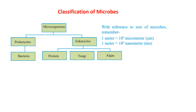Now we are going to study classification of microbes. Microorganisms are very small in size and we have to see them under a microscope. These microorganisms are mainly classified as prokaryotes and eukaryotes. Prokaryotes means the cell without distinct nucleus - only nuclear material is there. Prokaryotes are further classified as bacteria. Eukaryotes are grouped into three groups: Protista, Fungi, and Algae.